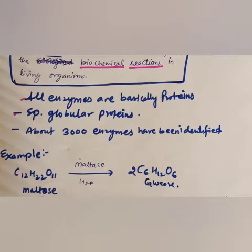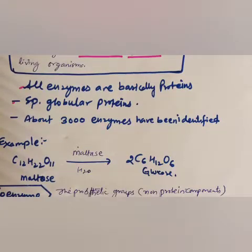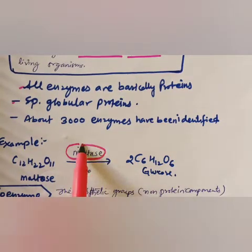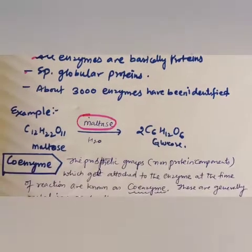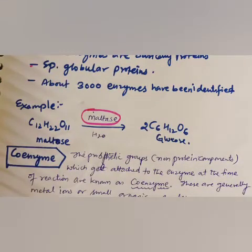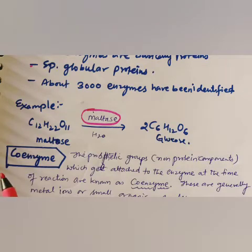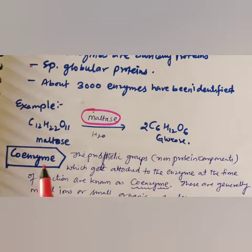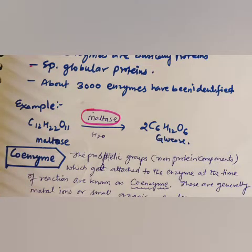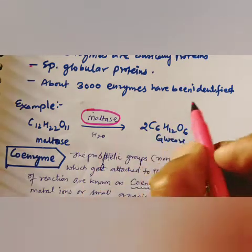Enzymes are generally named after the compound or class of compound upon which they work. For example, the enzyme that catalyzes hydrolysis of maltose into glucose is named maltase. Enzymes can also be named after the reaction — enzymes that catalyze oxidation of one substrate with simultaneous reduction of another are called oxidoreductases. The ending of enzyme names is always '-ase'.